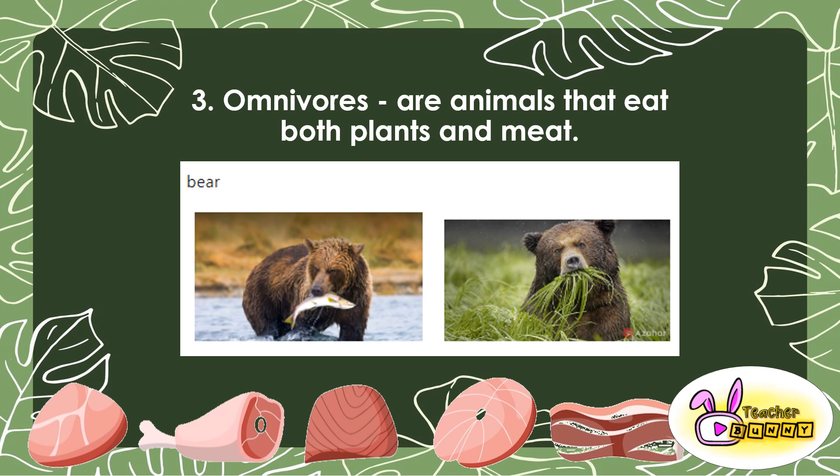Let us meet them! They are called omnivores. Omnivores are animals that eat both plants and meat. An example is bear — as you can see on the picture, this bear is eating a fish, which is meat, and those leaves, which are plants. So they are called omnivores.